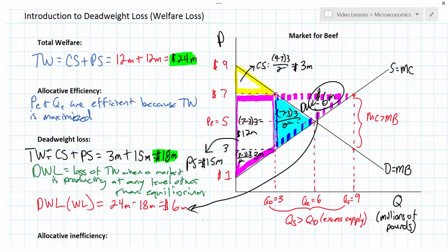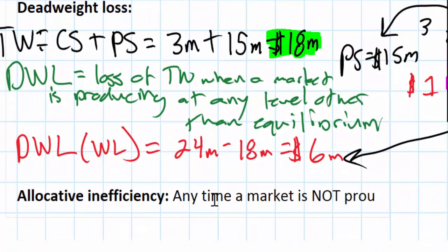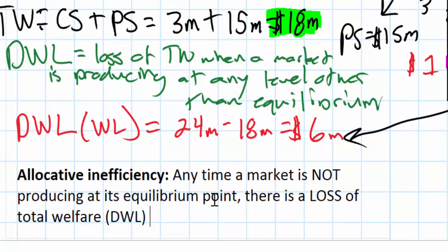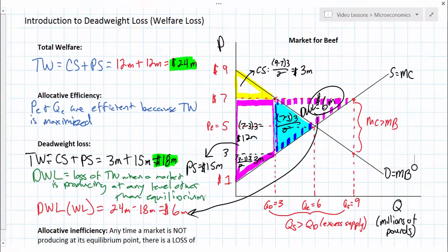This market is less efficient by six million dollars because of the higher price. In future units we're going to look at situations in which markets are not allocatively efficient — situations in which the government has intervened in a market through price controls, taxes on production or consumption, or subsidies for producers and consumers. We can conclude that anytime a market is not producing at its equilibrium point there is a loss of total welfare. This is what we call the deadweight loss, and the market is said to be inefficient.